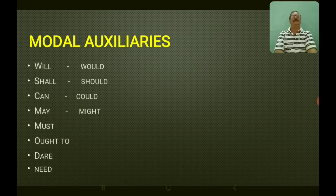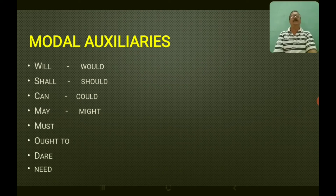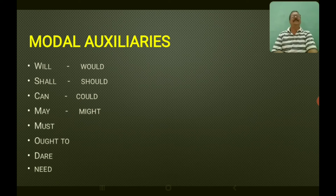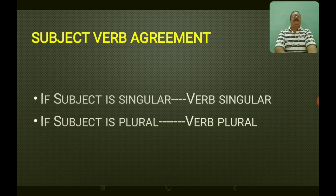Now you have modal auxiliaries. What are the modal auxiliaries? Will — past tense would; shall — past tense should; can — past tense could; may, might, must, ought to, dare, need. They are all called modal auxiliaries because they depend on the mood of the person. When you use them in a sentence, they act as helping verbs — that is why they are called modal auxiliaries.